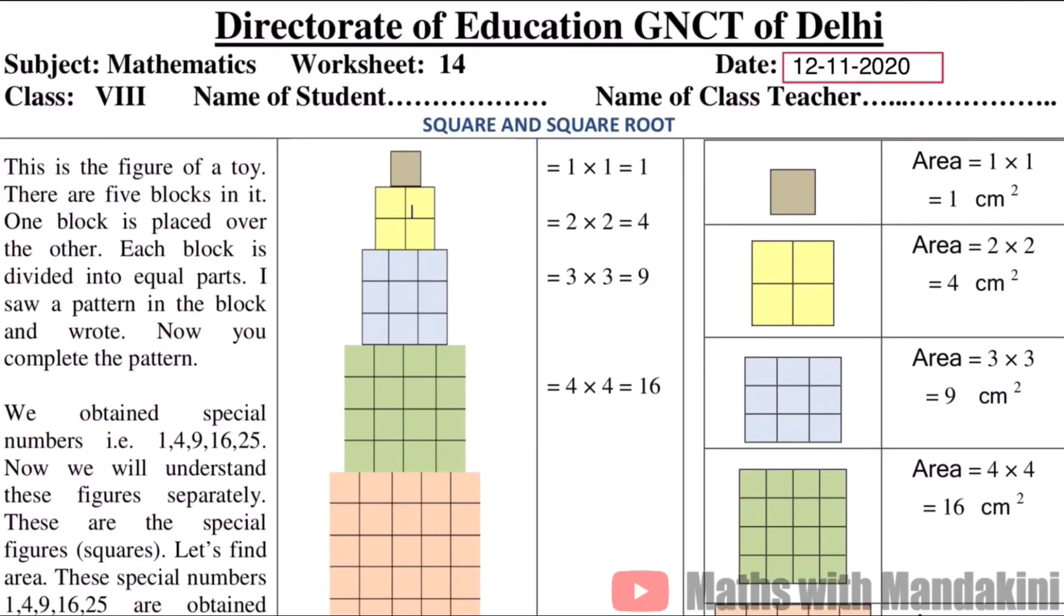Hello! Today we are going to discuss our class 8 mathematics worksheet 14. The date is 12th November 2020 and the topic is square and square root. So today we will discuss perfect square numbers. Let's start.